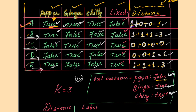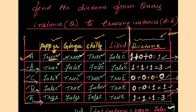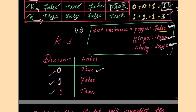Since K equals 3, we take the top 3 smallest distance values. The smallest is 0, and the next two are both 1 — there is a tie. So the top 3 values are 0, 1, and 1. The corresponding labels are: for distance 0 the label is true; for one distance-1 instance the label is false; and for the other distance-1 instance the label is true.